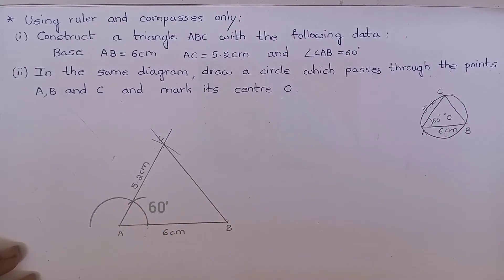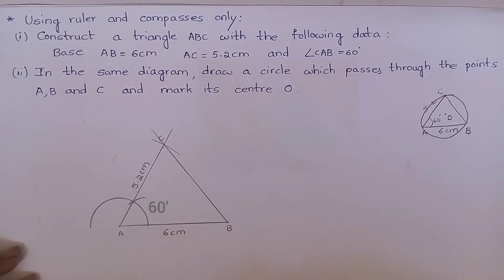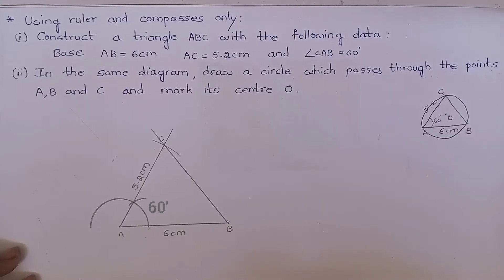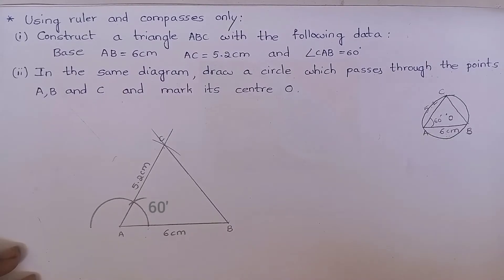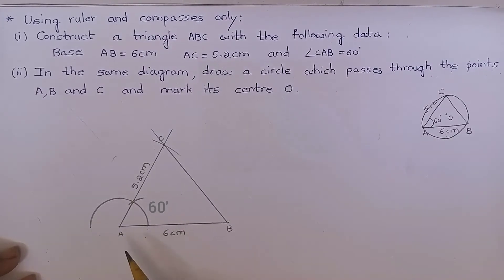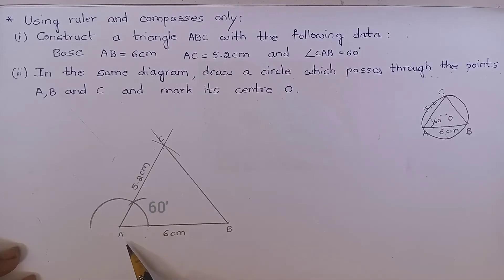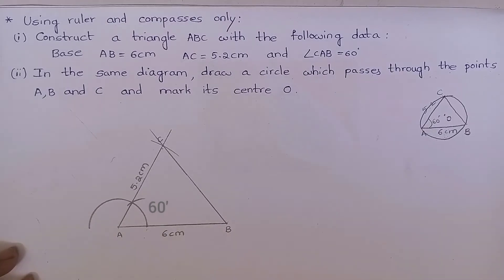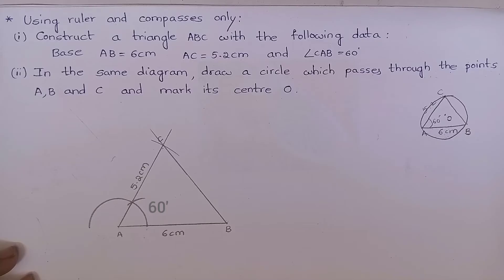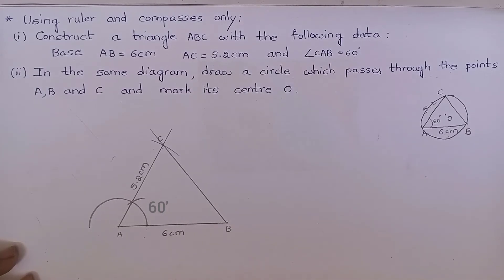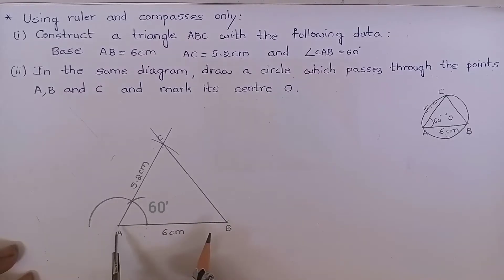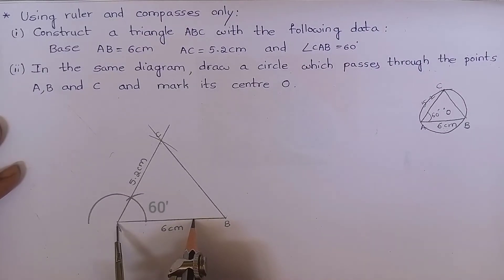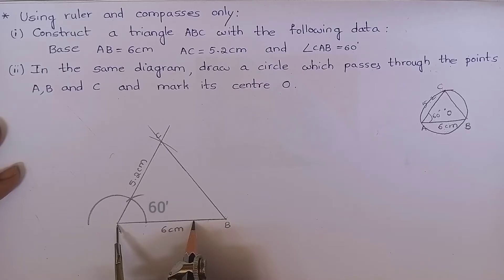We know that to construct a circumcircle to the triangle, we have to construct a perpendicular bisector for any two sides. Here, I am constructing a perpendicular bisector for AB. And we know that to construct a perpendicular bisector for AB, we have to take more than half of AB. Look at this. This is more than half of AB. From point A, mark an arc.